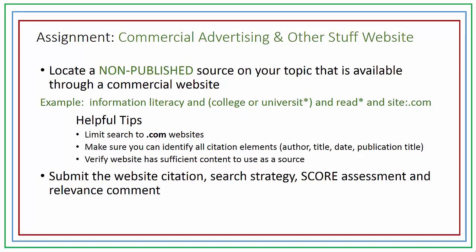The second .com source is going to be a website that is not otherwise published. You can use the same results list as you had for the published sources, but you will need to carefully check for publication information. Again, make sure you can identify all the citation elements and verify there is sufficient content to use as a source for a college-level research project. Build the website citation, search strategy, score assessment, and relevance comment for both sources, and submit them as one assignment.